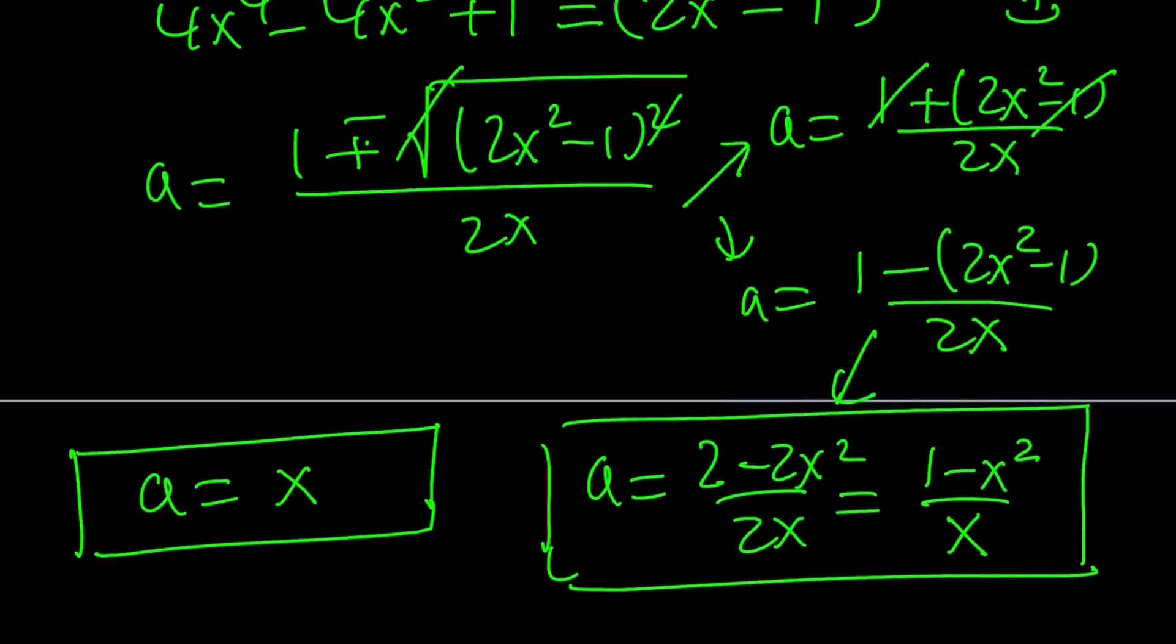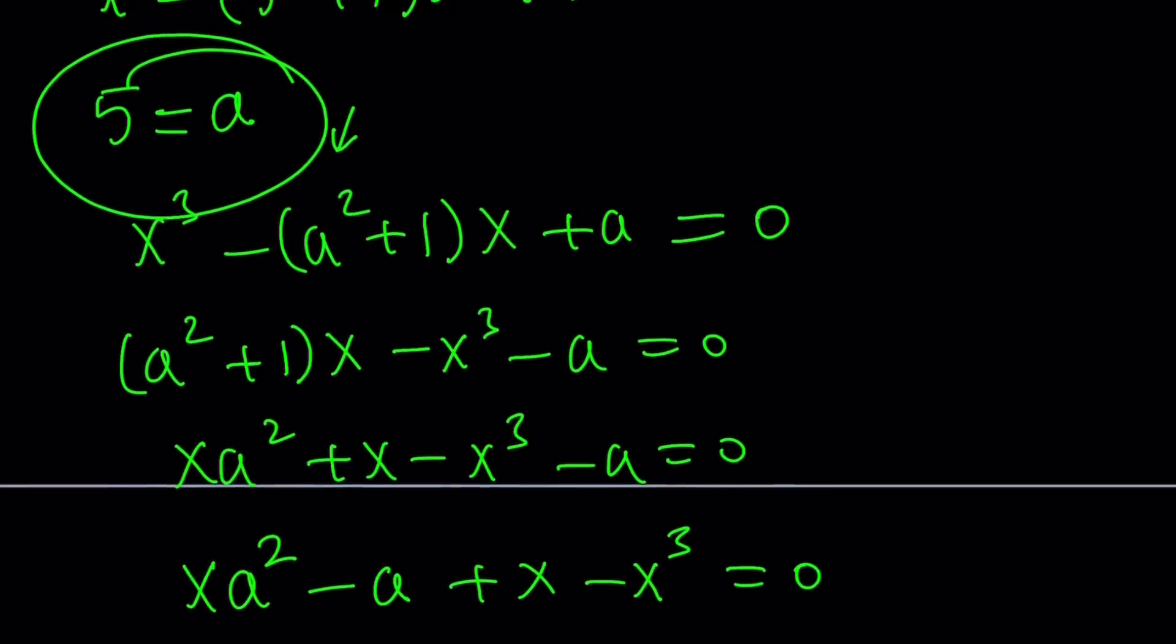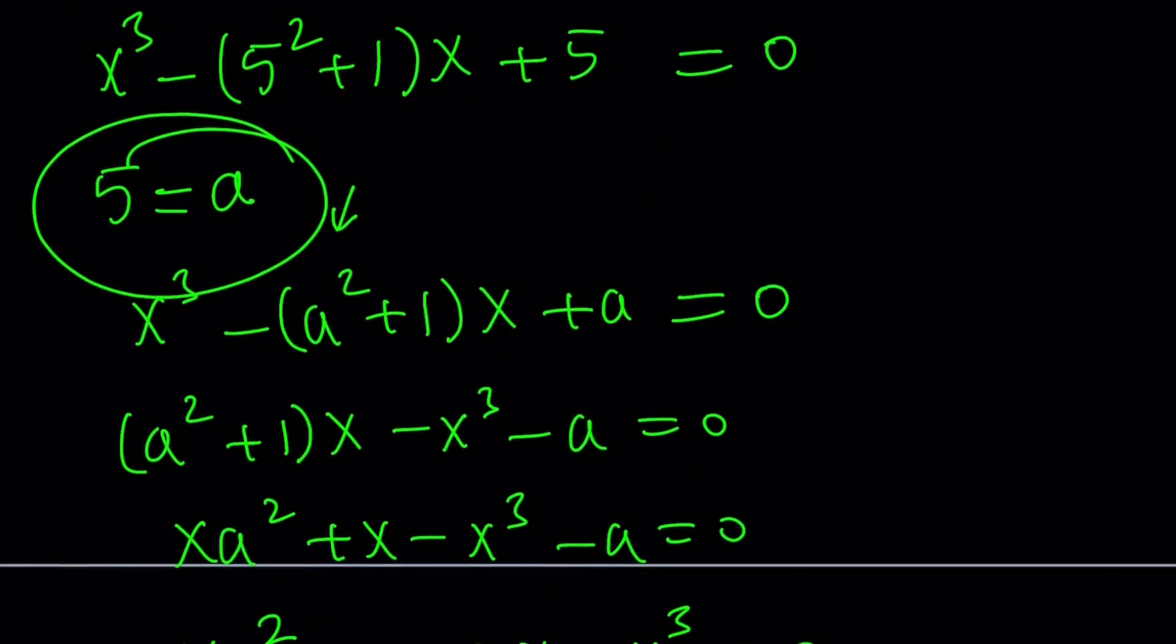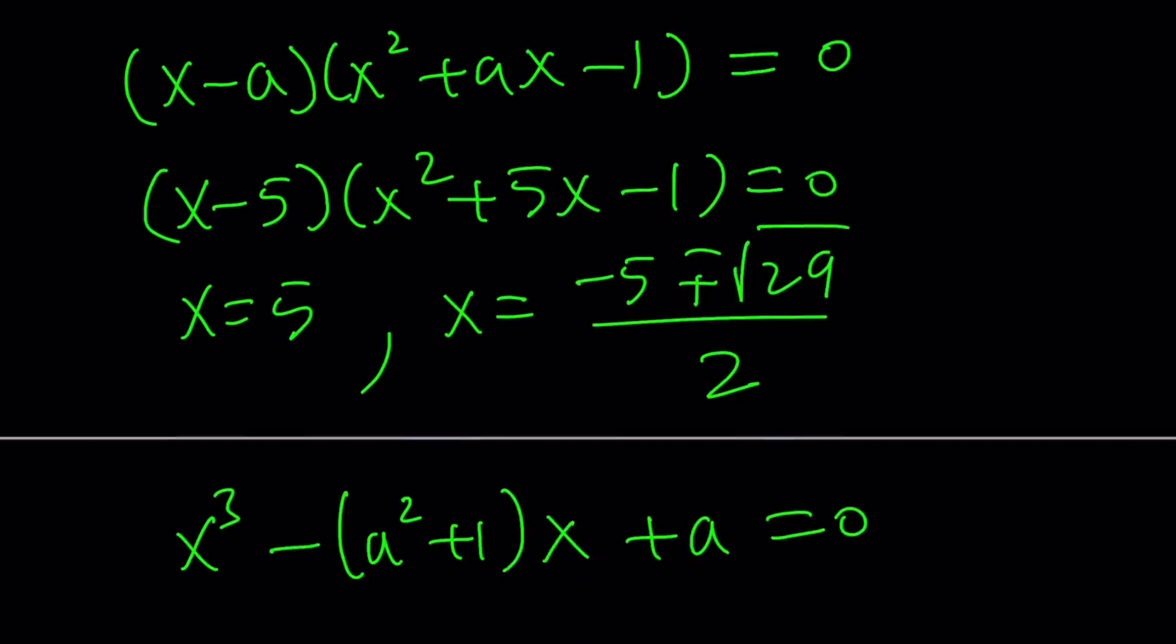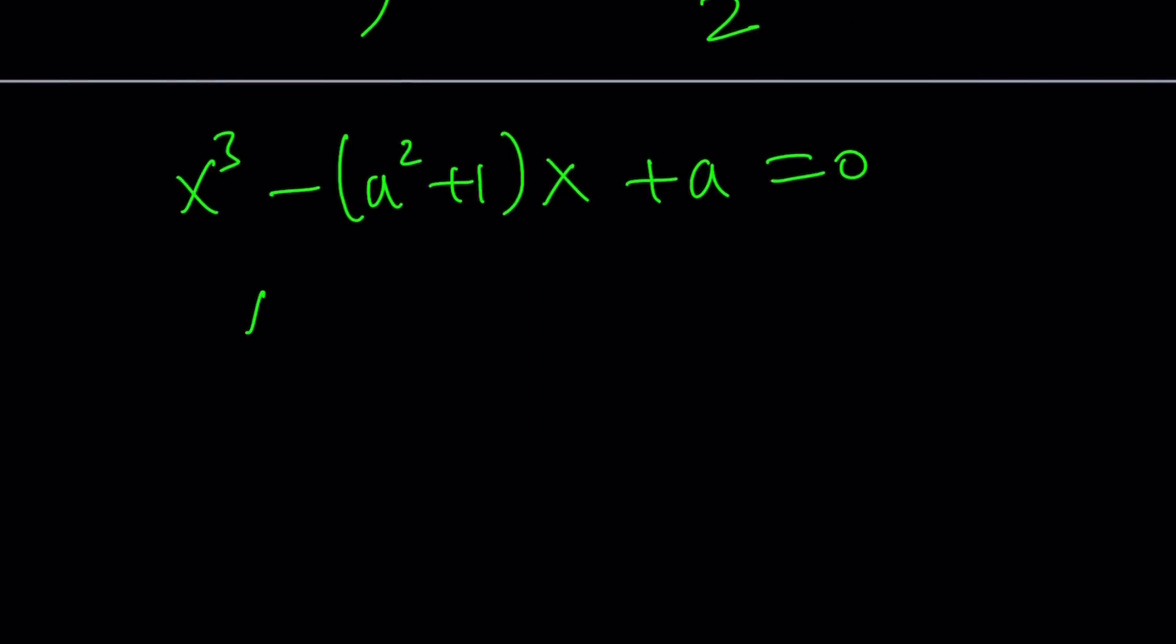Now what is another approach after we do the parametrization of this equation? How can we solve it? So let's go ahead and rewrite this equation: x cubed minus (a squared plus 1)x plus a equals 0. So that was the original equation. Remember, our original problem was x cubed minus 26x plus 5 equals 0. And we said that, hey, let 5 equal a. And that's what we got.